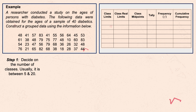Based on step 1, you have to decide on the number of classes. There is no strict rule, but some researchers randomly choose between 5 and 20 classes. Others take the square root of the sample size. Here, I'll use the square root of the sample size. With a sample size of 40, the square root falls between 6 and 7. The rule is to go with the lower number — in this case, 6.